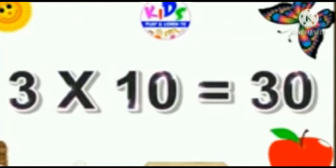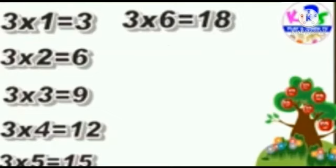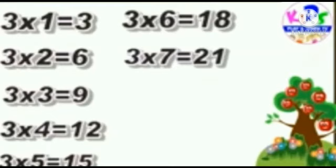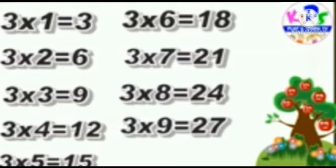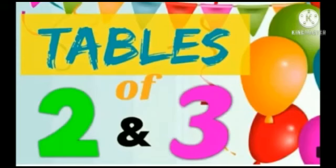3 10's is 30. Let's repeat. 3 1's is 3. 3 2's is 6. 3 3's is 9. 3 4's is 12. 3 5's is 15. 3 6's is 18. 3 7's is 21. 3 8's is 24. 3 9's is 27. 3 10's is 30.